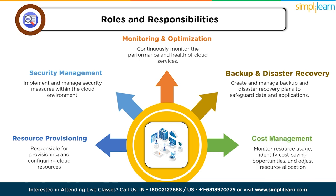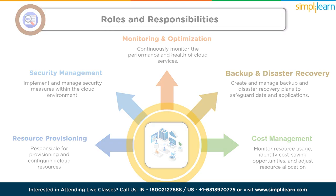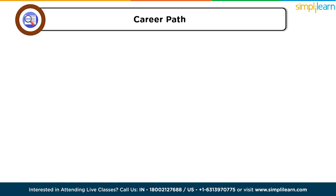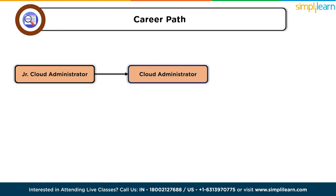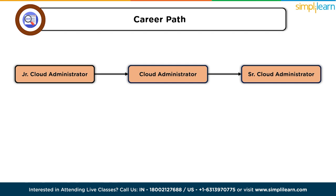The last responsibility is cost management — cloud administrators are responsible for managing cloud costs. They monitor resource usage, identify cost-saving opportunities, and adjust resource allocation as needed to optimize expenses. The career path starts from a junior cloud administrator, an entry-level position with responsibilities under supervision focused on learning cloud management fundamentals. Then comes cloud administrator, managing day-to-day cloud operations independently with expertise in resource provisioning, security, and troubleshooting. And finally, a senior cloud administrator assumes leadership roles, including managing complex cloud environments, optimizing costs, and contributing to architecture decisions.